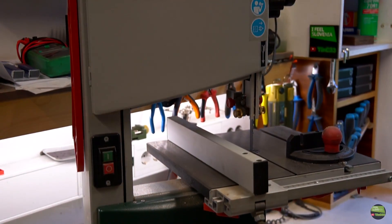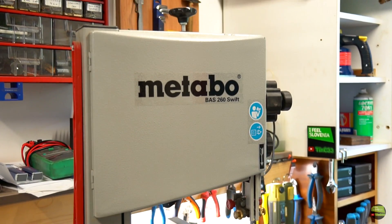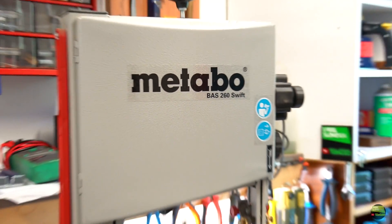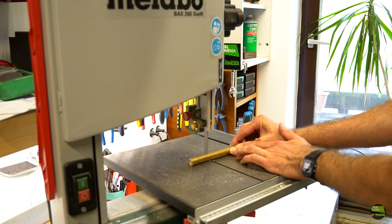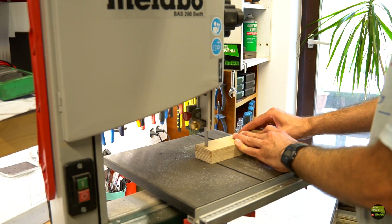Hello, my name is Tine and I got this Metabo Bass 260 band saw. It's made for wood cutting, but I use it mostly for cutting aluminum, brass and metal, and even for wood here and there.